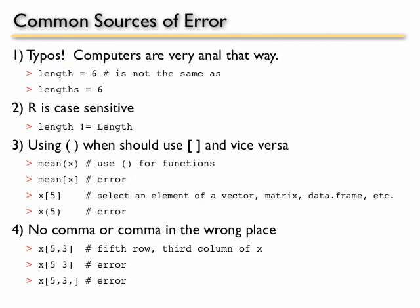The number four, you will make this mistake a lot and then you will stop making it. Commas in the wrong place. Commas are used to separate dimensions in a data frame. So x square brace 5 comma 3 means you have something with two dimensions, x is a matrix or a data frame, and you want the fifth row, third column of x.